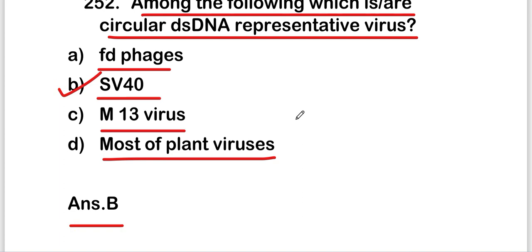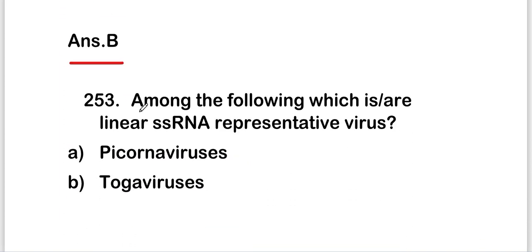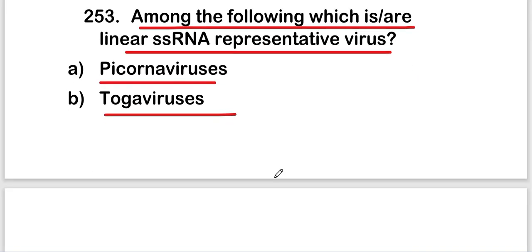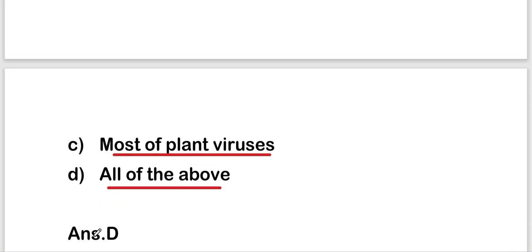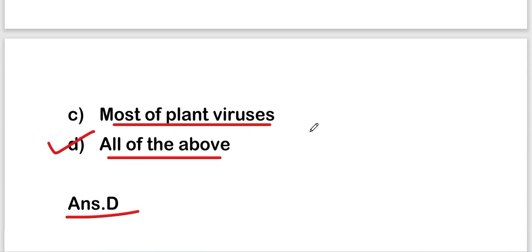The next question: among the following, which is or are linear single-stranded RNA representative viruses? Options are picornavirus, togavirus, most of the plant viruses, or all of the above. The right answer is option D — all of the above are correct linear single-stranded RNA representative viruses.